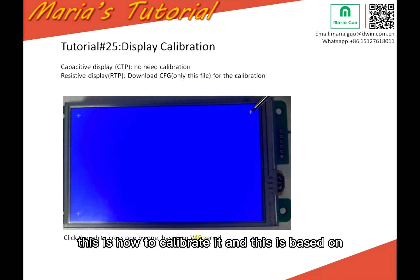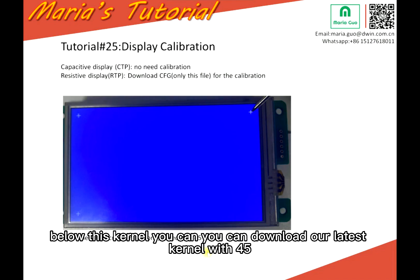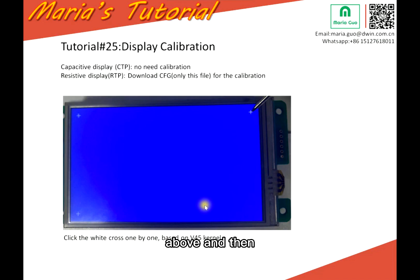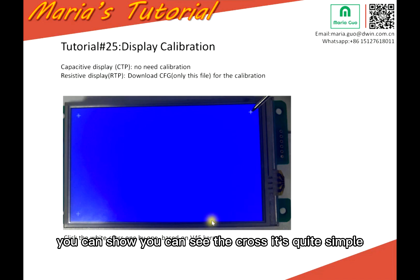And this is based on V45 color. So if your display is below this color, you can download our latest color, V45 or above. And then when you download the CFG, you can see the cross. It's quite simple.